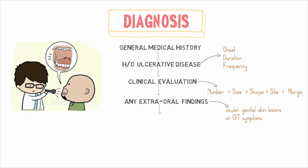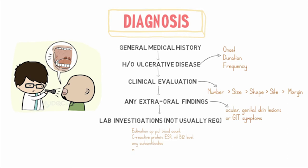In very few cases, lab investigations may be required, such as estimation of the full blood count, C-reactive protein, ESR, vitamin B12 level, or any auto-antibodies in some complex cases, which may help provide a clue about the exact cause of RAS.